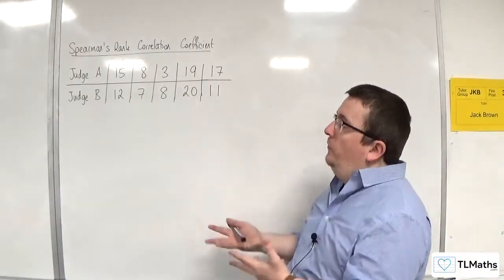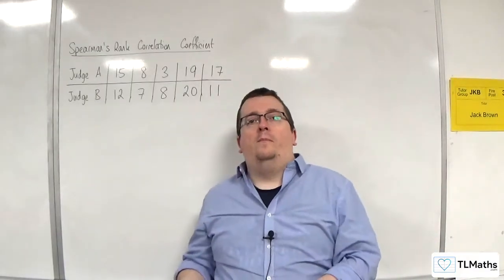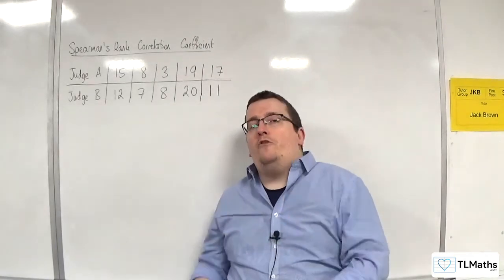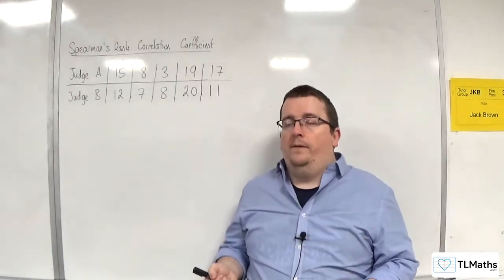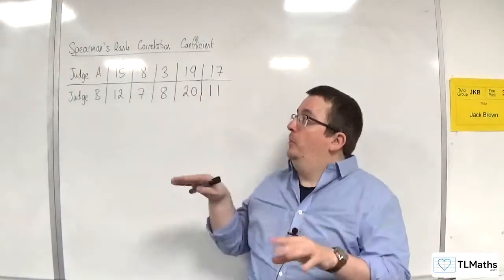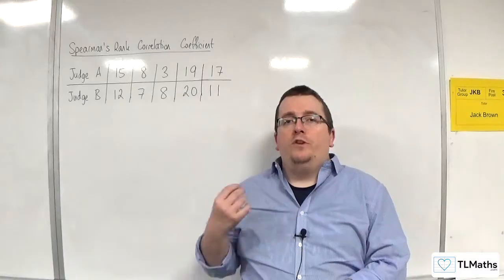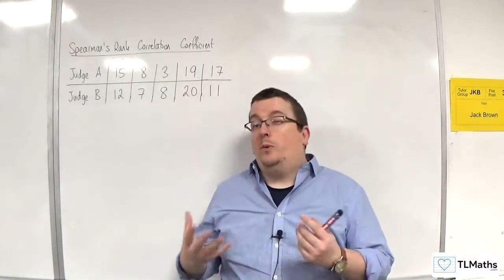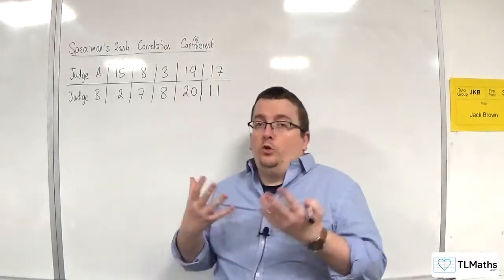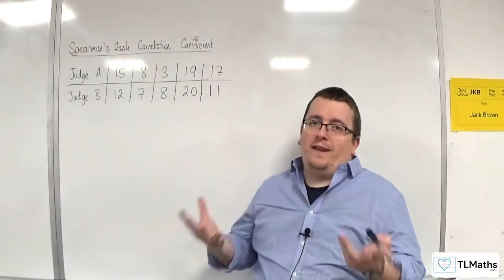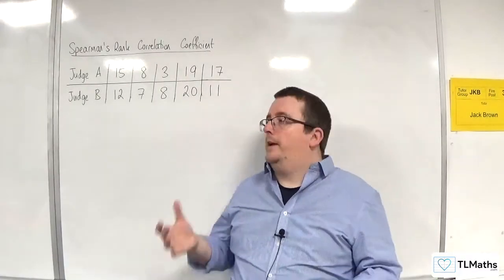Now, even if it was the case, it is very unlikely that Judge A's scores would be normally distributed. So because the data is not coming from a parent-by-variant normal distribution, so the two variables behind the scenes are not normally distributed, the PMCC would not be valid. So we can't calculate it. I mean, you could calculate it, but it wouldn't really make much sense.